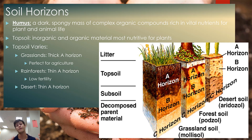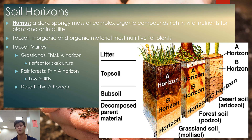Rainforests have a very thin A-horizon because they are so biologically productive that all nutrients and organic matter are instantly taken up the moment they become available. Deserts also have a very thin A-horizon, but for the opposite reason — there is such low biological activity that there simply isn't enough organic matter generated to build one. So depending on where you are, different biomes have different soil horizon structures.